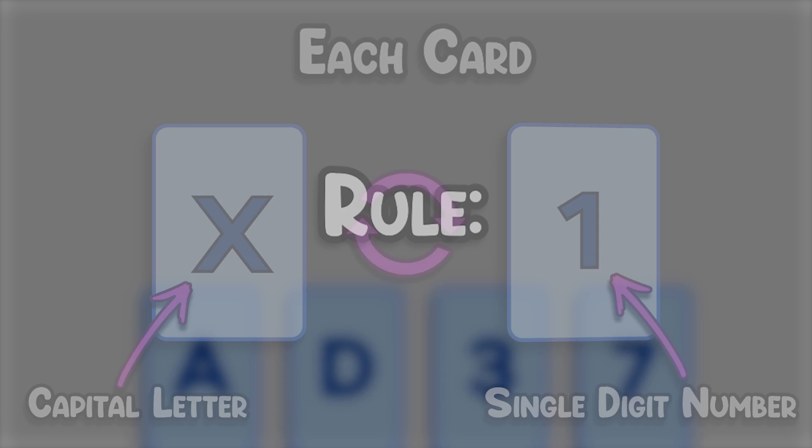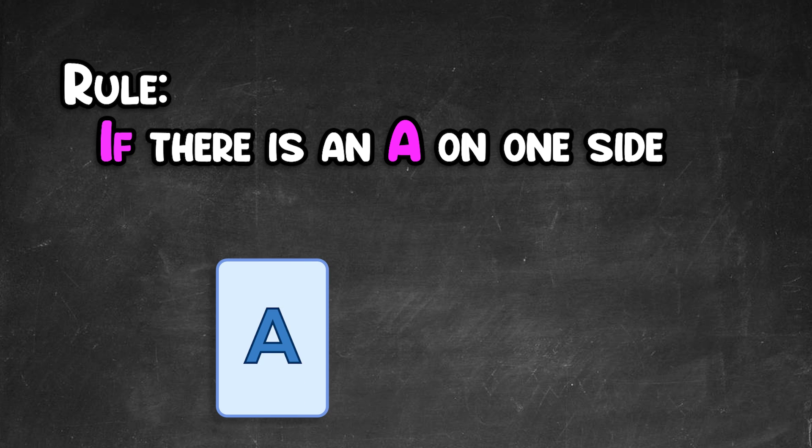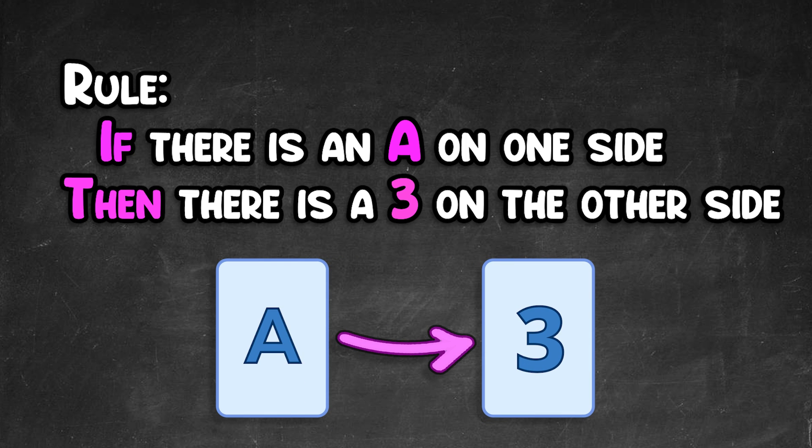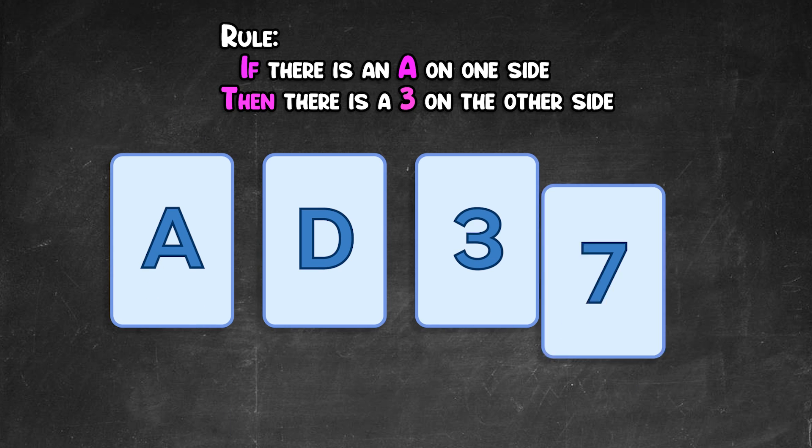There's also a rule. If there is an A on one side of the card, then there must be a 3 on the other side of the card.